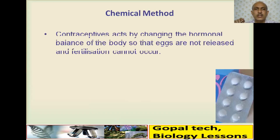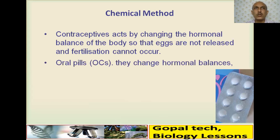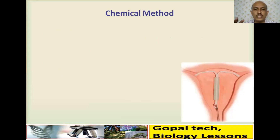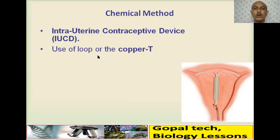Chemical method: contraceptives change the hormonal balance in the woman's body so that eggs are not released on time and fertilization cannot occur. Oral pills (OCs) are taken orally and change the hormonal balance using combinations of progesterone or estrogen — they can cause side effects and should be taken under medical guidance. IUD (intrauterine device), also called copper T or IUCD, is placed in the uterus to prevent pregnancy.